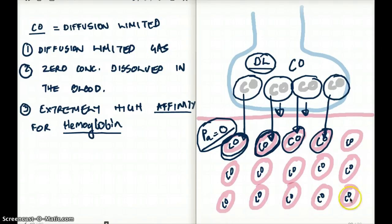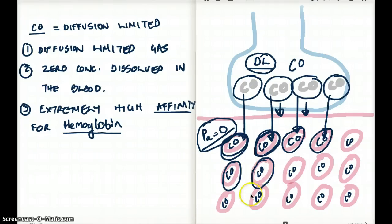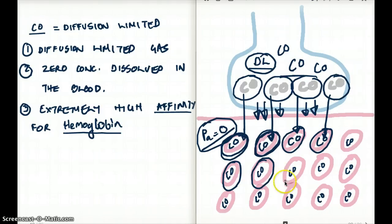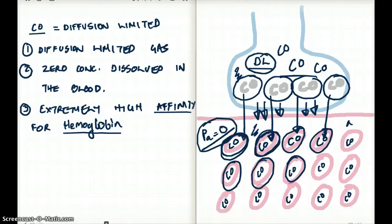You might think this is a perfusion problem — but no, because perfusion is perfectly fine. There is blood coming to the alveolus, but the blood is already bound to carbon monoxide. How can it bind to more? And the carbon monoxide is not letting go because of its high affinity. So perfusion is fine, but diffusion is not happening anymore. The diffusion is stuck — all the carbon monoxide is accumulating because there are no more RBCs to bind to. That's why it will never equilibrate between the alveolus and the arterial, making this a diffusion-limited problem.